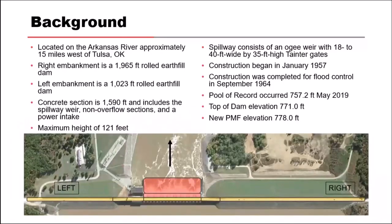So here's our background. Keystone Dam is located in Arkansas, west of Tulsa. In the picture on the bottom, you can see it has a left and right abutment with the spillway in the center — it's about 1,600 feet wide. The whole dam is 121 feet tall. The spillway consists of 18 tainter gates, each 40 by 35 feet tall, completed in 1964. The pool record was 757.2 feet, set around 2019, with a discharge of around 300,000 CFS. The top of dam elevation is 771, and in 2018 they calculated a new PMF elevation of 778, meaning we have a lot of water potentially going over the top of this dam.